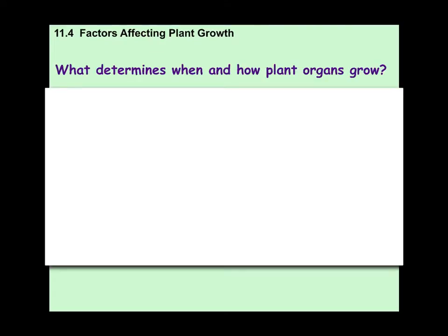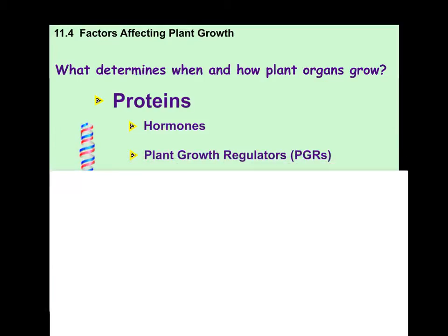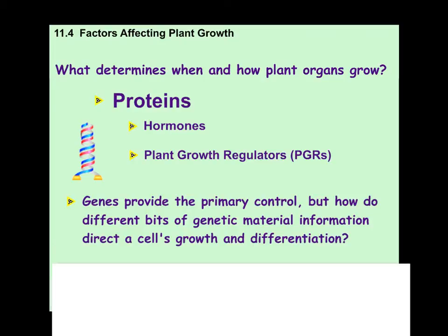First things first: what determines when and how plant organs grow? The key factor is always proteins. Proteins are vital for the structure of any plant, as well as animals. The other things we're going to break this up into are hormones and PGRs — plant growth regulators. To regulate something means essentially deciding if a plant is going to grow or not. So proteins, hormones, and PGRs will help determine when a plant can grow.